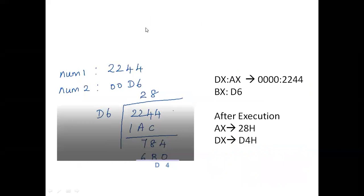We are going to divide a 16-bit value from the register or location. The quotient goes to AX and the remainder to DX. Taking two numbers — 2244H and D6H — using long division, we get the quotient and remainder. We know DX must be loaded with 00 since the number is positive (MSB bit is 0). AX = 2244H, BX = 00D6H. After execution, AX will have 0028H and DX will have 00D4H.